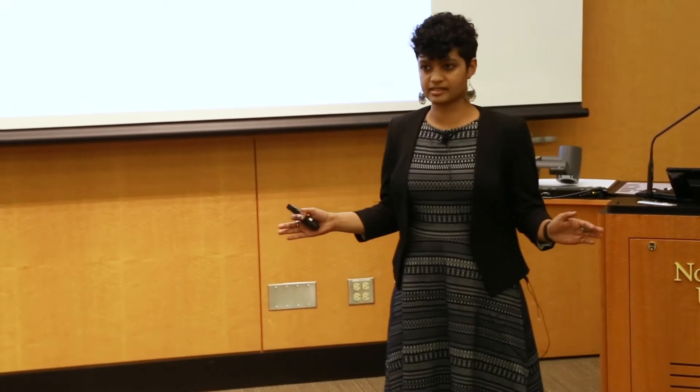We showed them two pairs of brand new objects that they hadn't seen before, one that shared the relation of same, like the two green blocks on the left-hand side, and one that shared the relation of different, like the foam tower and the pig on the right-hand side. We measured the amount of time that they look at each pair of objects.